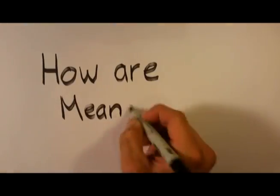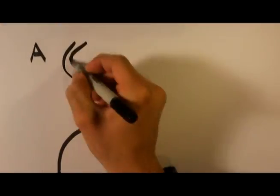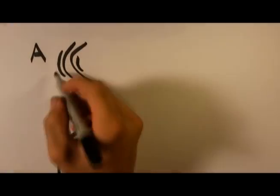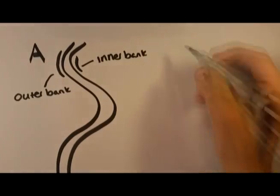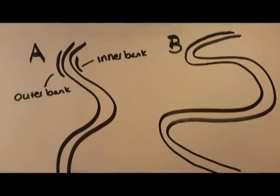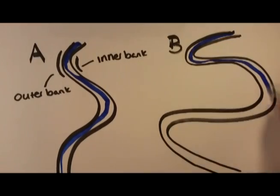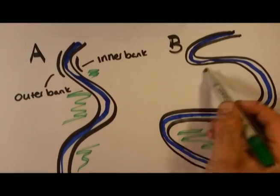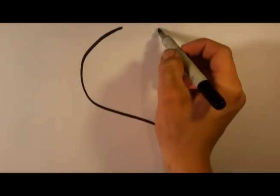Now let's talk about how meanders are formed. When a river has a slight bend, centripetal forces cause the water at the outer bank to flow relatively fast in comparison to the water at the inner bank. Water with a high velocity has the energy to take sediment along with it.